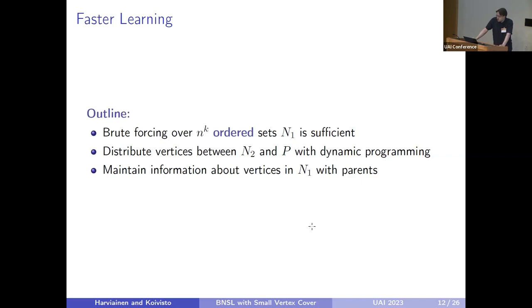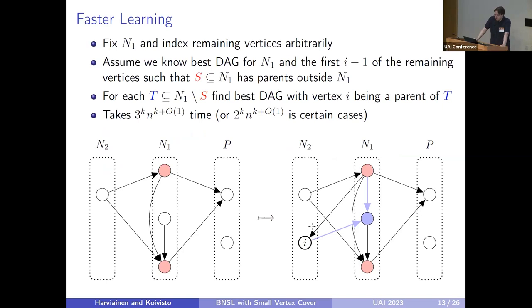In our paper, we show that it is sufficient to only search over all possible vertex covers. We do not need to search over all possible sets of their parents. We do this by distributing the remaining vertices between the set of its parents of the vertex cover and the periphery using dynamic programming, while maintaining information about the vertices in the vertex cover that already have parents in it.